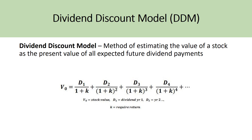Looking at the dividend discount model, it is a method of estimating the value of a stock as the present value of all expected future dividend payments. Essentially, if you know what the company is going to pay in dividends throughout the following five or ten years, you simply discount the dividend at that future date back to the present value, sum up all of the discounted dividends, and that would be the value of your stock. The model assumes the company is valued based on only its guaranteed income — the dividend it assures it will pay its shareholders.